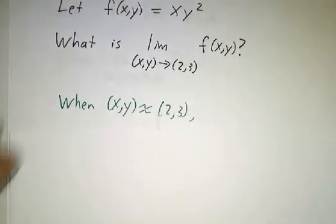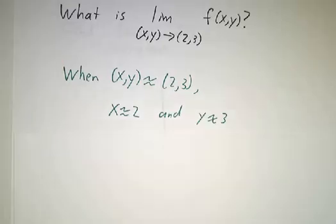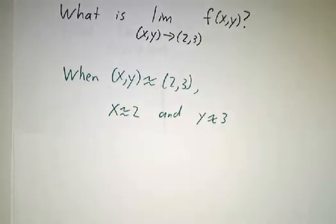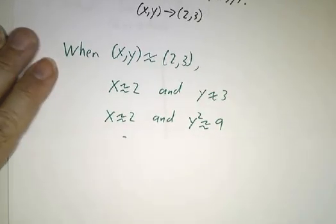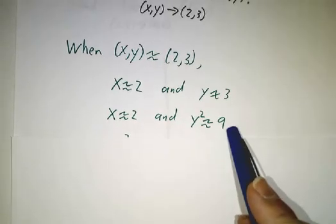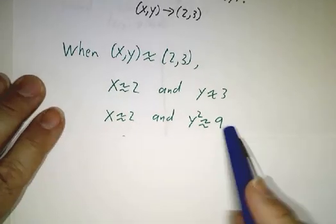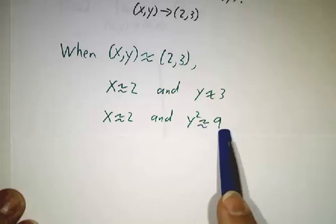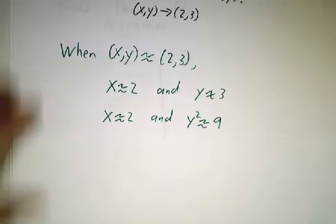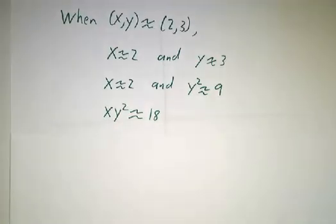So we have to imagine what happens if x, y is really close to 2, 3. When x, y is really close to 2, 3, that means that x is close to 2 and y is close to 3. If y is close to 3, then y squared is close to 9. And if you take a number that's close to 2 and you multiply it by a number that's close to 9, you get a number that's close to 18.